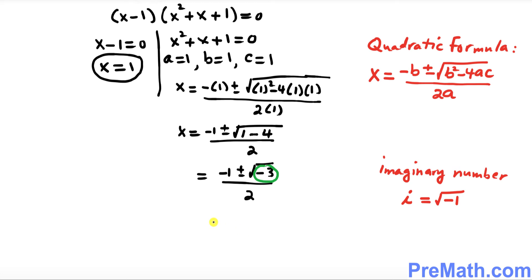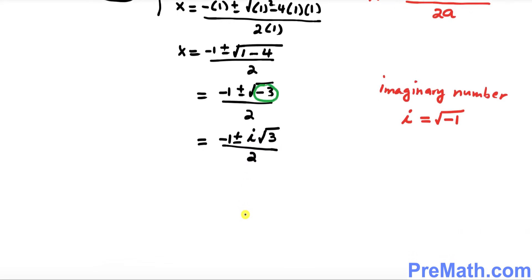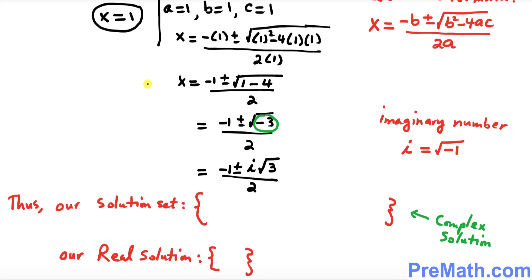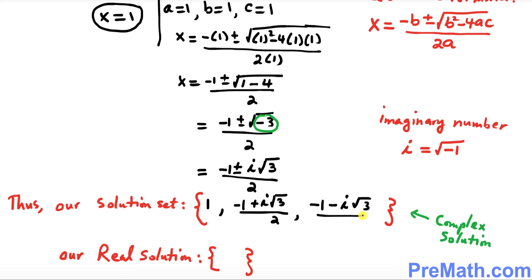So we can write this as negative 1 plus or minus i times the square root of 3, all divided by 2. Our solution set is: x equals 1 is one solution, x equals negative 1 plus i√3 divided by 2 is the second solution, and x equals negative 1 minus i√3 divided by 2 is the third solution.